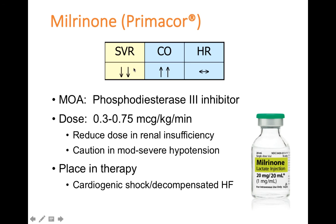Like dobutamine, milrinone decreases SVR, so caution is needed in severely hypotensive patients. Comparing the two: dobutamine is felt to be a stronger inotropic agent overall, while milrinone doesn't have as much direct effect on heart rate — a benefit in patients at risk for cardiac ischemia. Milrinone is thought to be more potent at decreasing SVR, so more hypotension may occur, but it doesn't produce the tachyphylaxis seen with dobutamine. Its place in therapy — like dobutamine — is cardiogenic shock and decompensated heart failure.